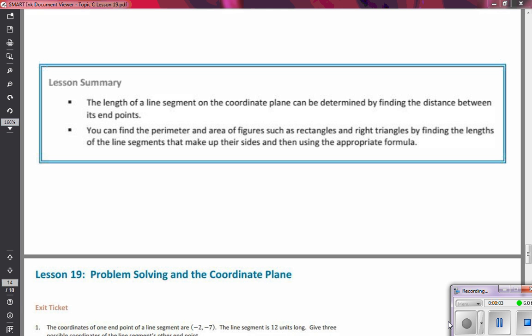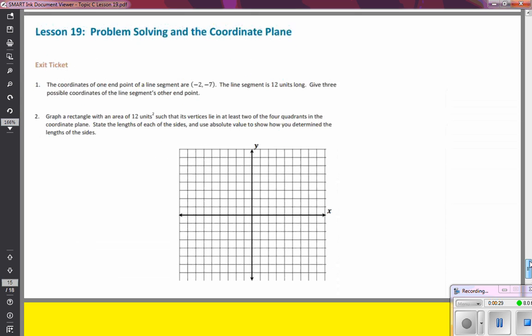Hi everybody, today in math we worked on problem solving in the coordinate plane and we discovered today that the length of a line segment on the coordinate plane can be determined by finding the distance between its two endpoints. We can also use this to find perimeter and area of figures such as rectangles and right triangles by finding the lengths of the line segments that make up their sides and using the appropriate formula. So we're going to do a little practice here and I'm going to use this grid to help us.